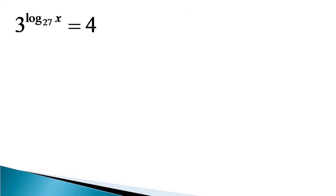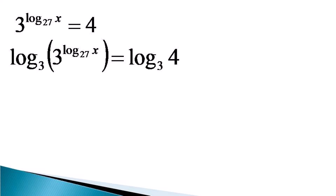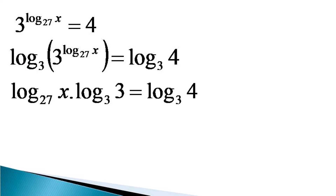To solve this equation, first we take log of both sides to the base 3, which makes an equivalent equation as: log of 3 raised to the power log x to the base 27, to the base 3, is equal to log of 4 to the base 3. We then use the power law of log, which gives us log of x to the base 27, into log of 3 to the base 3, equal to log of 4 to the base 3.